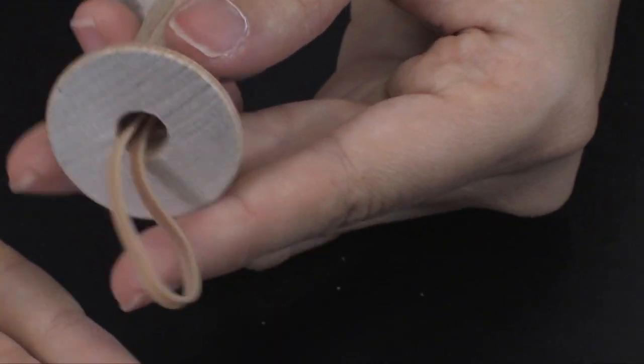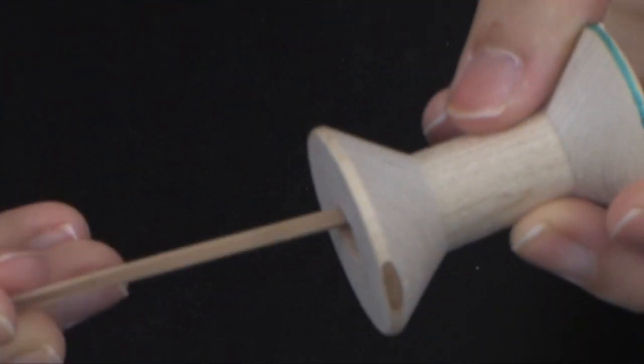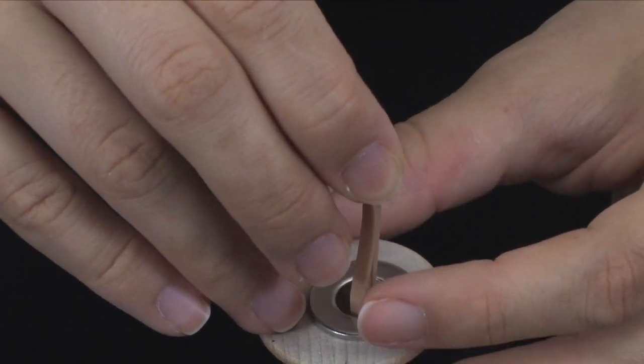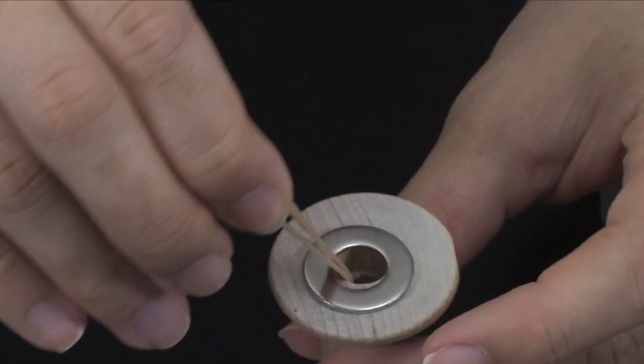The other end of the rubber band comes through the hole on the opposite end of the spool. Students will thread the rubber band through the center hole of a metal washer so that the washer rests flat against the end of the spool.